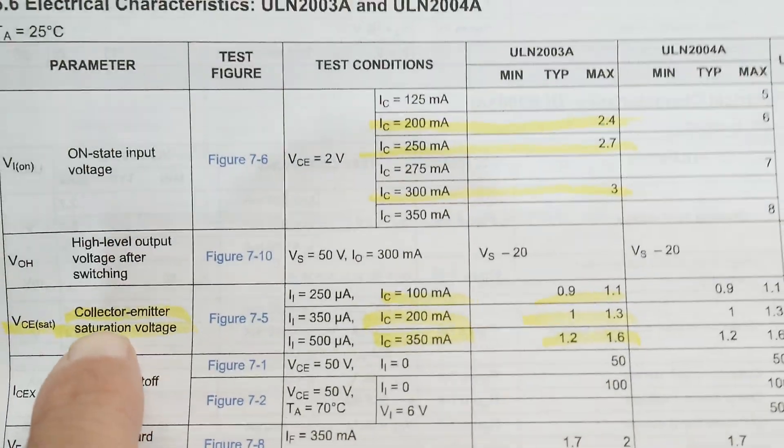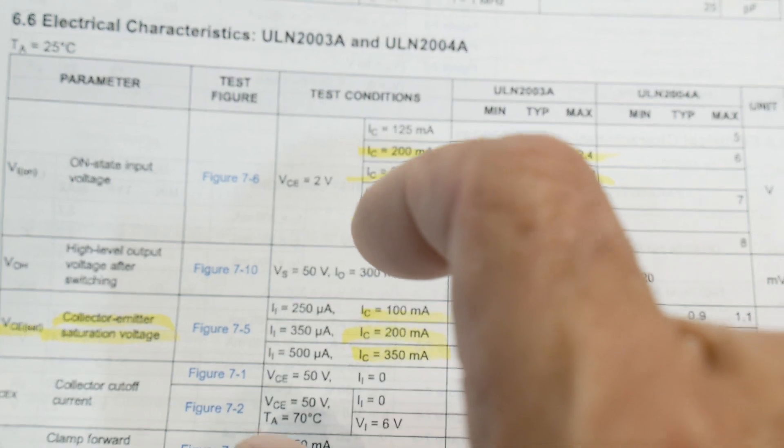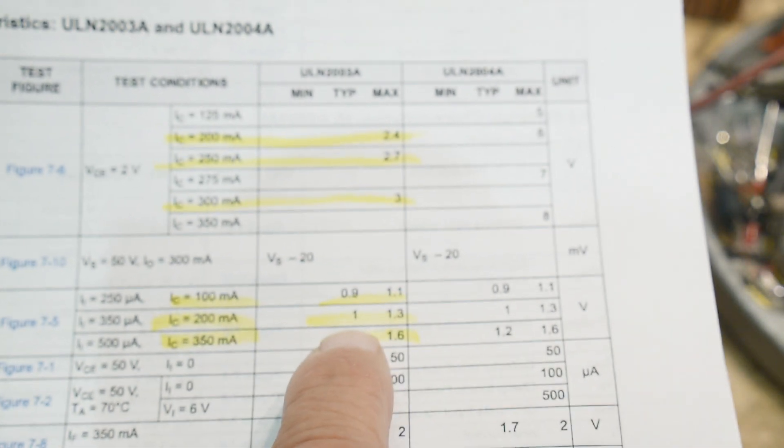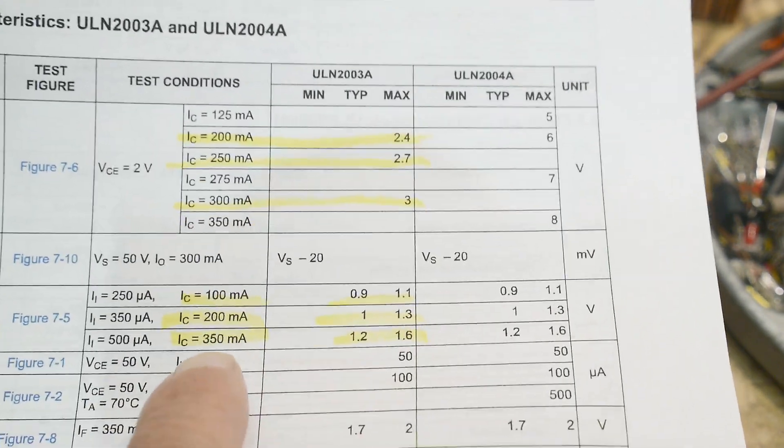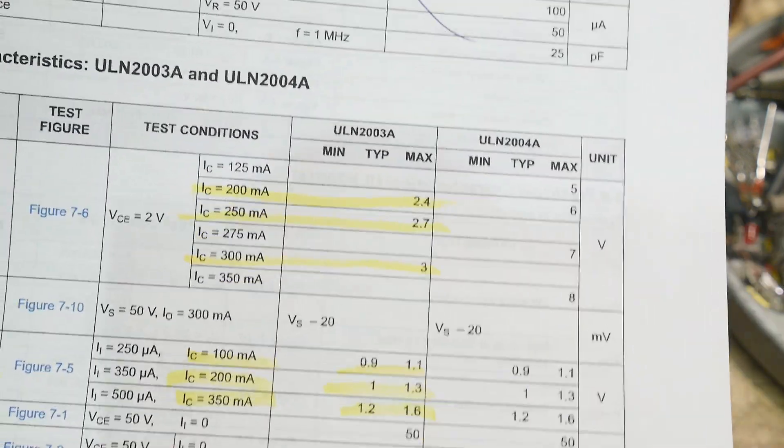Now this is the drawback here, the collector emitter saturation voltage. It's going to be a transistor on the output and it's going to drop some voltage itself. So at 200 milliamps, it's dropping a volt and at 350 milliamps, it's dropping 1.2 volts. And so you have to make sure that's okay in your system.